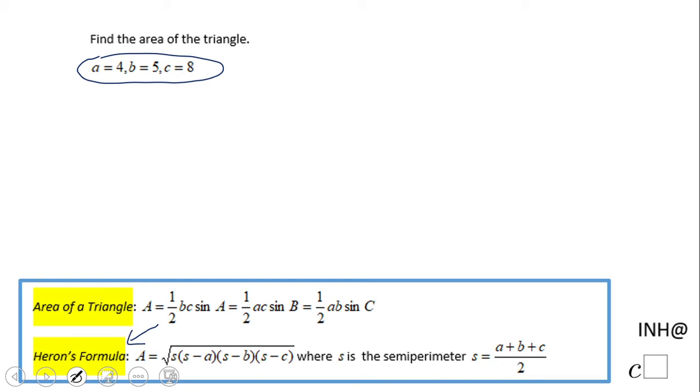Okay, what do we have? This S. You notice this S, that is what we call the semi-perimeter, which means you add all the sides and divide by two. That's the first thing I'm going to do here.